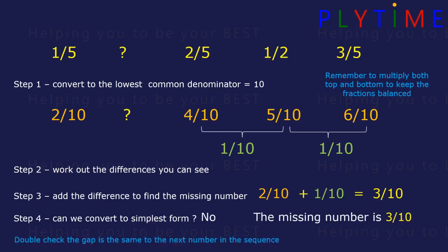We can double check the gap is the same to the next number. So 4 tenths less 3 tenths — the gap is 1 tenth. So that's correct.